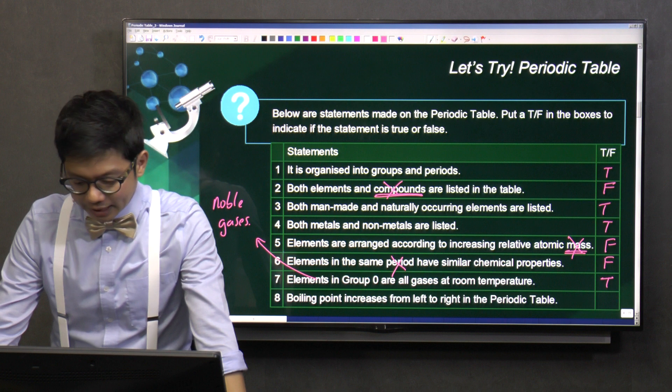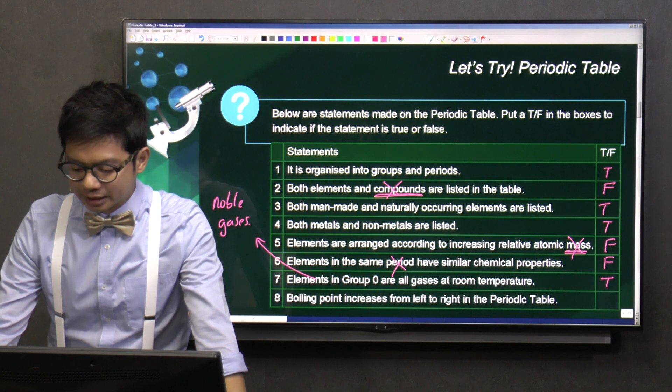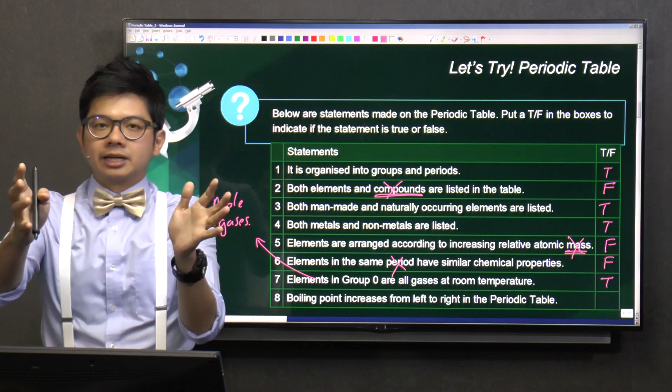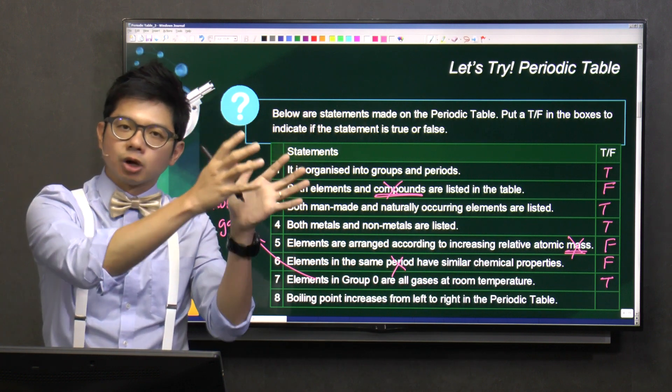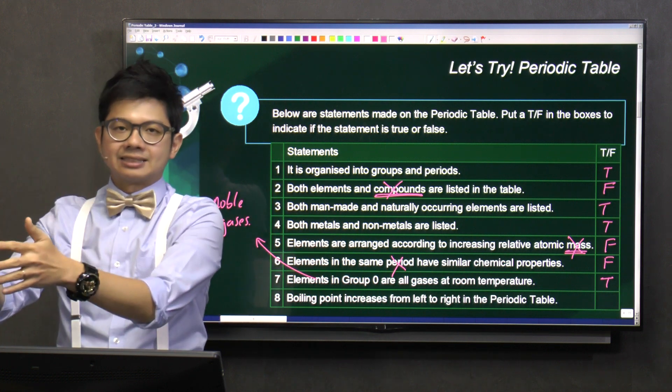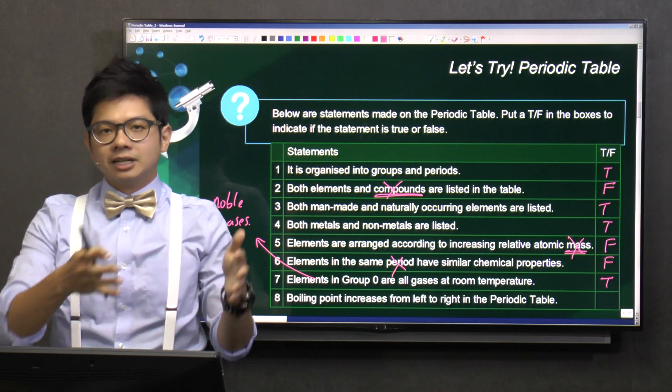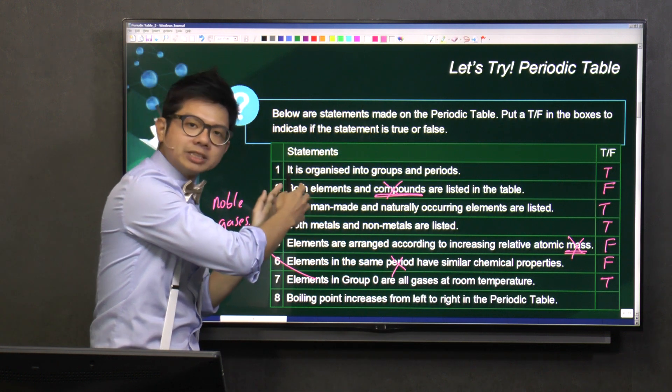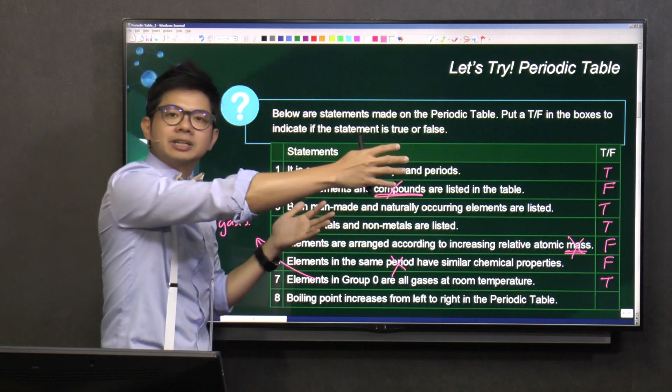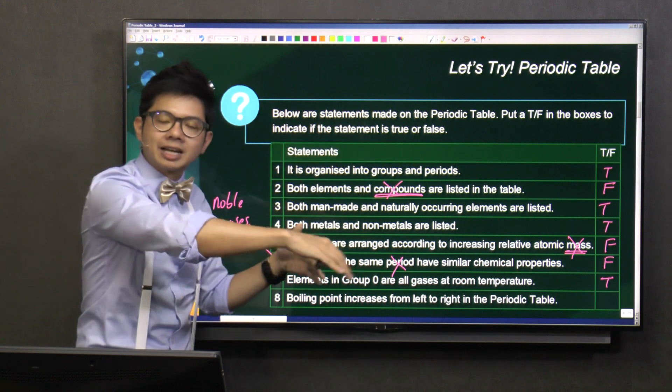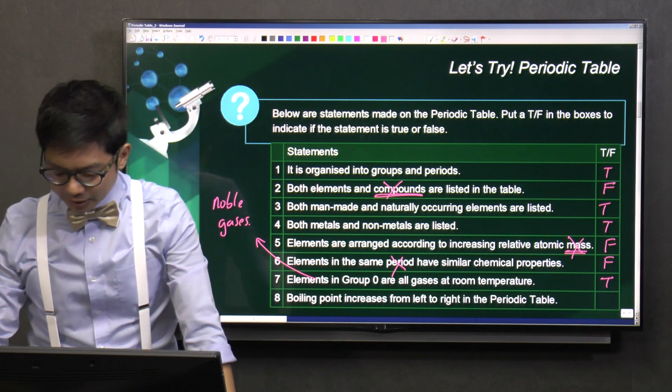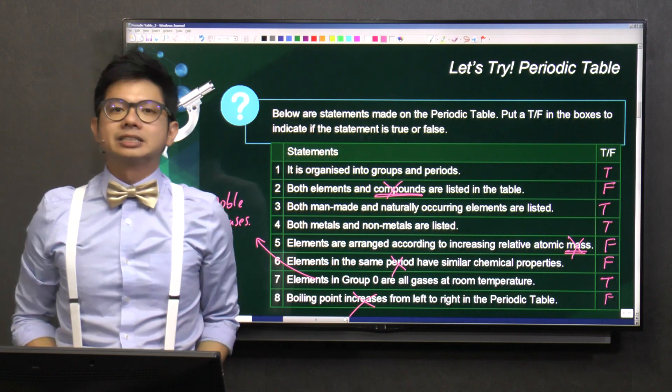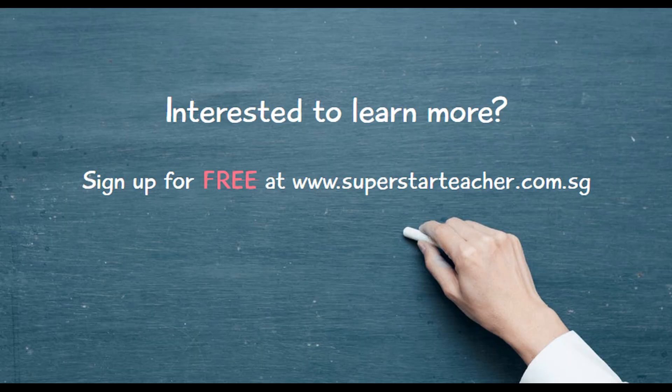And next, eight. Boiling point increases from left to right in a periodic table. We know that from the left to right, the state changes from solid to liquid to gas. And, of course, if the trend of the states is from solid, liquid to gas, that means the boiling point must be decreasing across the period. Because lower boiling point, that means higher tendency that it is a gas. So, this is wrong. Because instead of increases, it should be decreases.